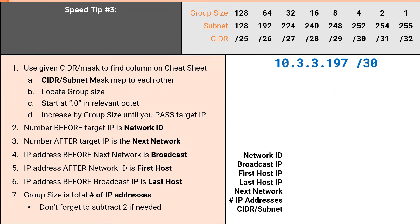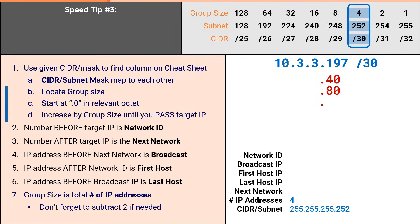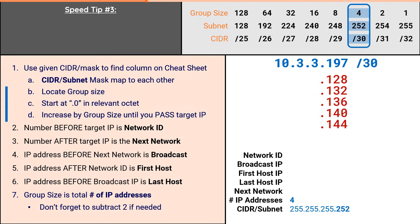Our third problem is 10.3.3.197/30. This IP and mask will demonstrate speed tip number 3. Just like any other problem, the CIDR notation will determine our column, and our column will reveal the subnet mask and total number of addresses. Normally, we would start at .0 and increment by 4 until we pass 197, but obviously that would take a very long time. We could use speed tip number 1, which has us multiply our group size of 4 by 10, allowing us to start at .40, then continue by doubling and tripling, but even that would take longer than necessary. We could try speed tip number 2 and start at .128, but incrementing by sets of 4 from there would still take a very long time to get to 197. Which brings us to our next speed tip.